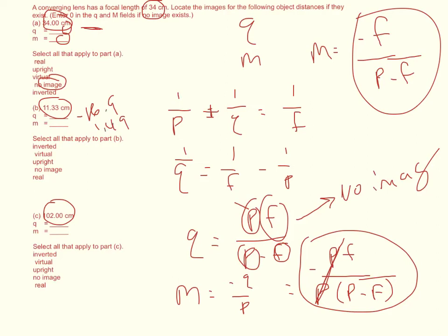The difference is this is a negative number. This is positive. So since the magnification is positive, it's going to be upright. But since Q is negative, it's going to be a virtual image.